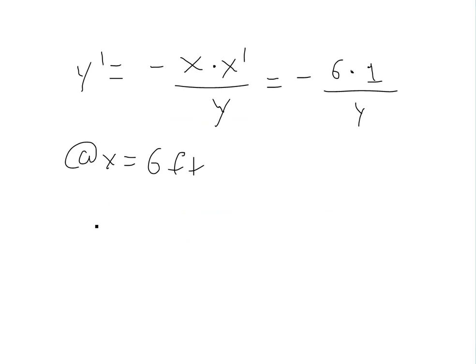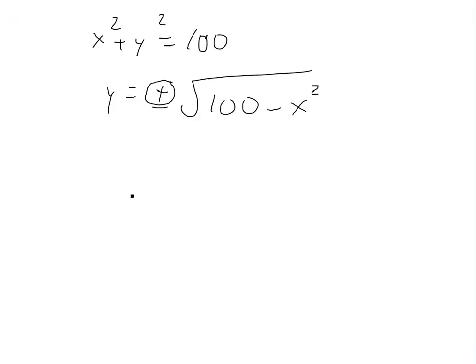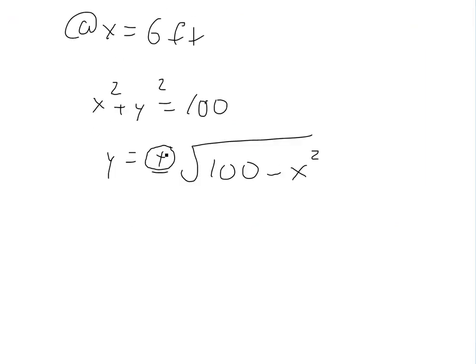So we know that x squared plus y squared equals 100. Solve for y in terms of x, we get y is equal to plus or minus square root 100 minus x squared. And we're only dealing with the plus, because a negative y doesn't make sense. It's kind of a negative height, so we're only dealing with a positive one right here.